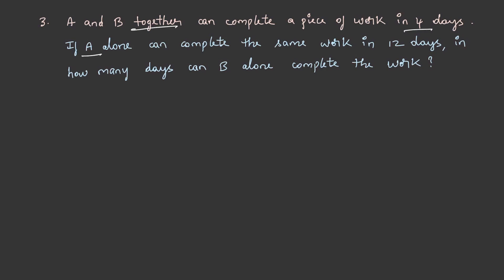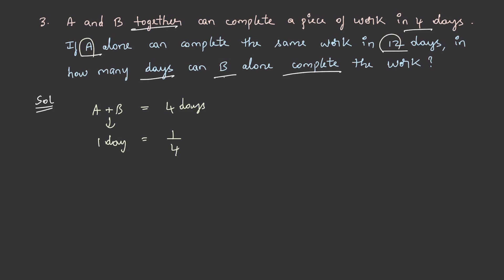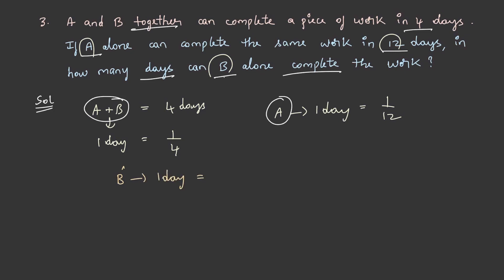If A alone can complete the same work in 12 days, in how many days can B alone complete the work? A and B together complete the work in 4 days, so their one day work is 1/4. A's one day work is 1/12. B's one day work is 1/4 − 1/12 = 1/6. Therefore, B alone can finish the work in 6 days.